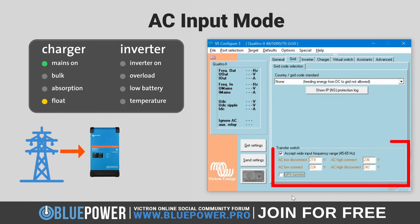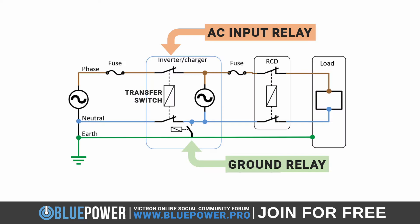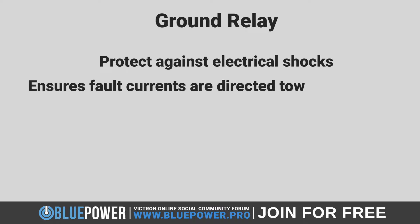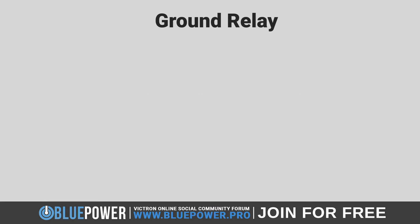In AC input mode, with the transfer switch closed, the inverter transfers the received AC input to the output while disconnecting the neutral from the protective earth. This disconnection is crucial to comply with safety regulations and to ensure that the grounding conforms to electrical standards, preventing any potential ground loop or electrical hazard. This helps protect against electrical shocks and ensures that any fault currents are safely directed towards the earth, helping to trigger circuit protection devices like circuit breakers or fuses when necessary.